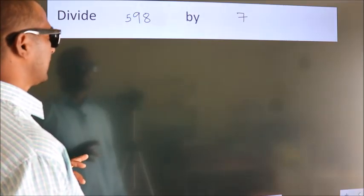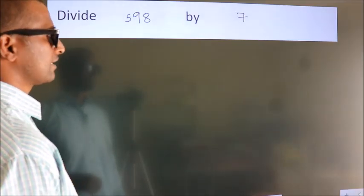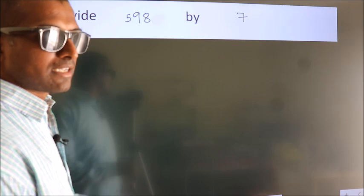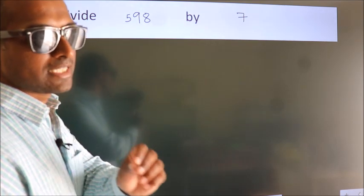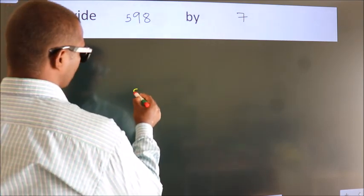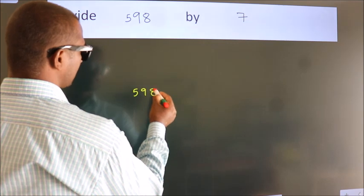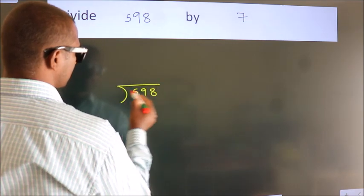Divide 598 by 7. To do this division, we should frame it in this way. 598 here, 7 here.